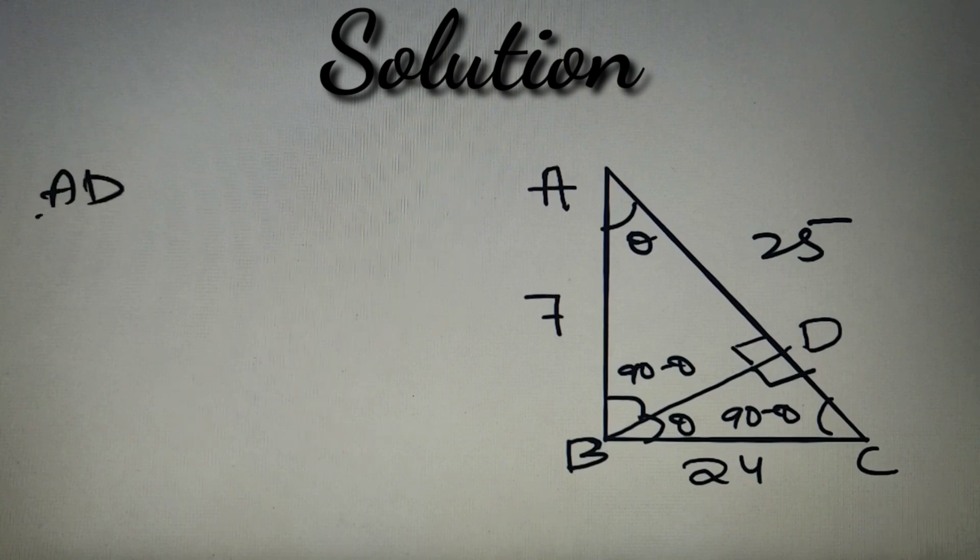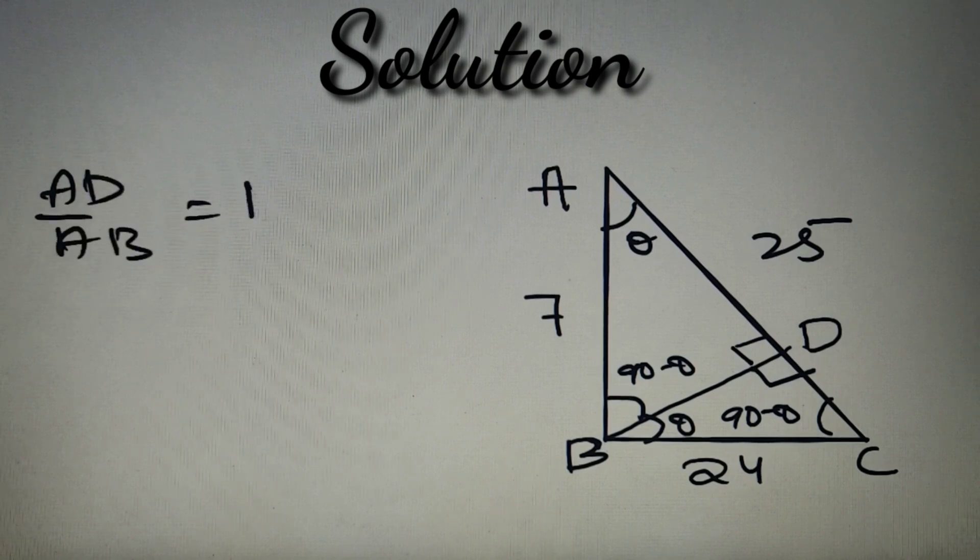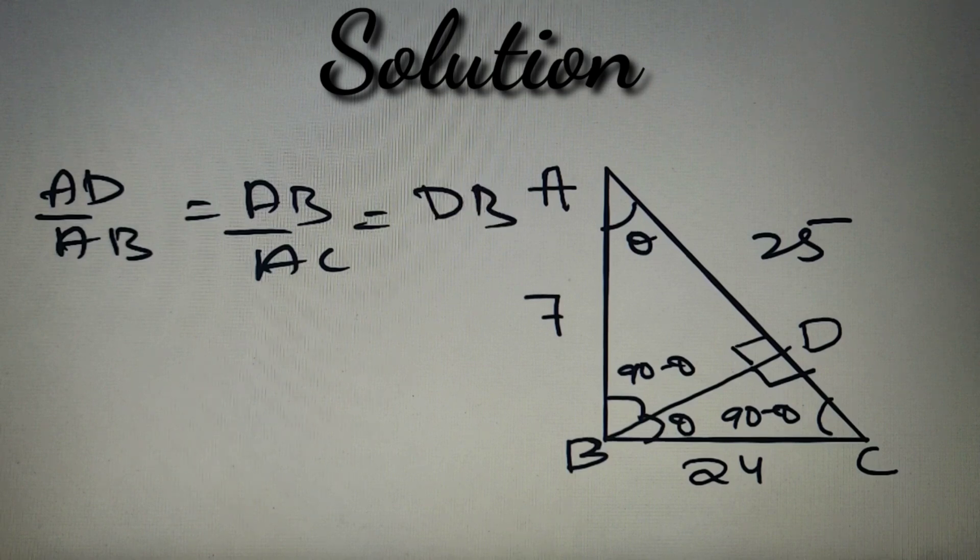We can say that AD by AB equals AB by AC, which is then equal to DB by BC. We have to just put the length of the sides and we will get our respective value.